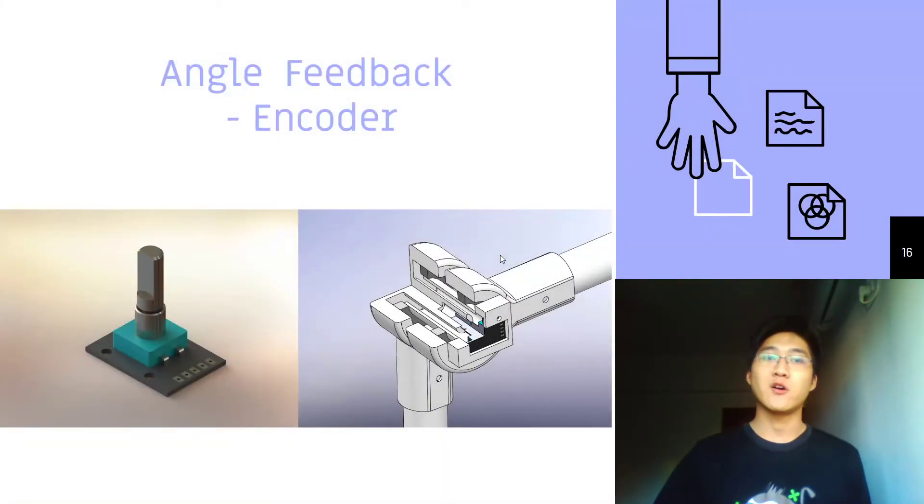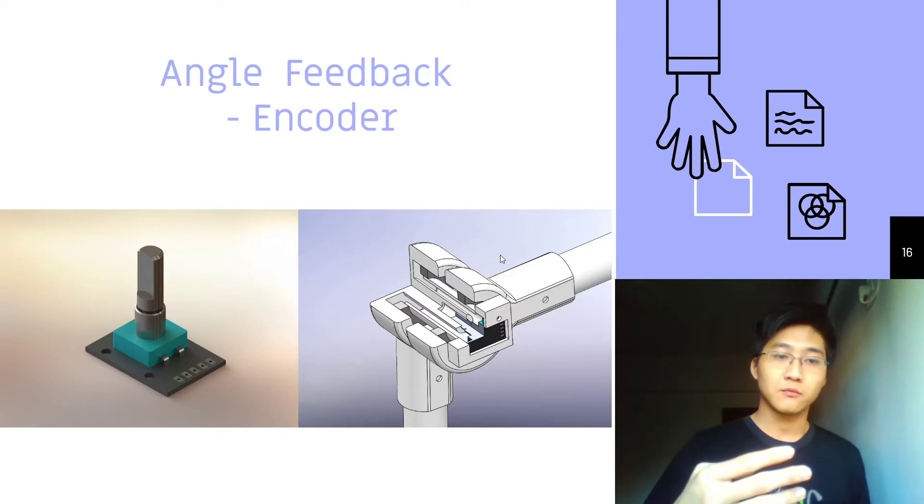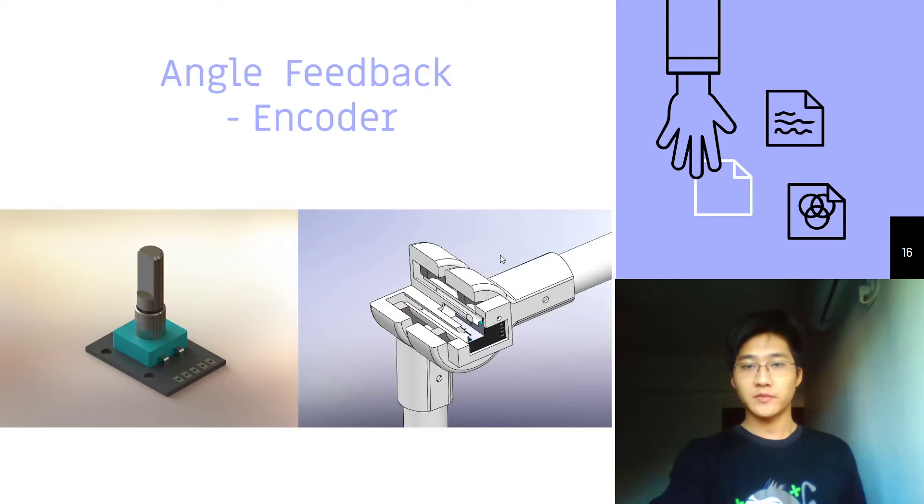In the feedback system, we will have the angle feedback, which is an encoder. We have the encoder in one of the joints of the parallelogram, as shown in the second picture, so the user won't detect it. And also for wiring, we will hide the wiring in the linkage bar, which is also very convenient.